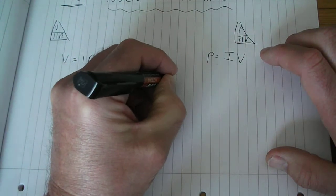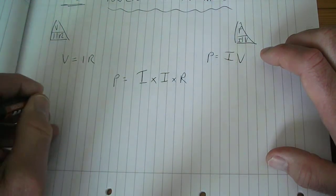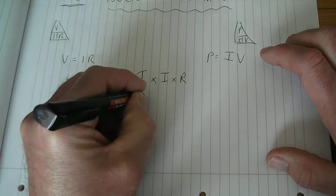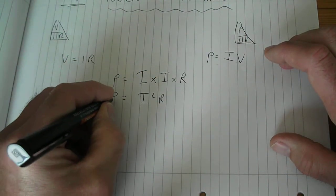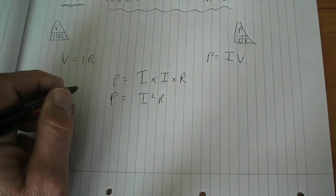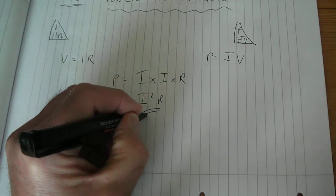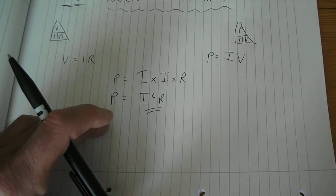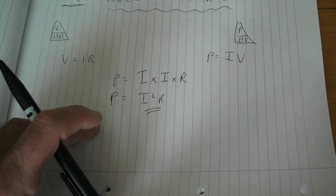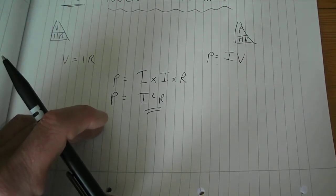And from that we get I squared R as power. Well, this formula is actually a very important formula in electrical engineering because it explains all our power losses in lots of situations, either in cables or overhead lines.